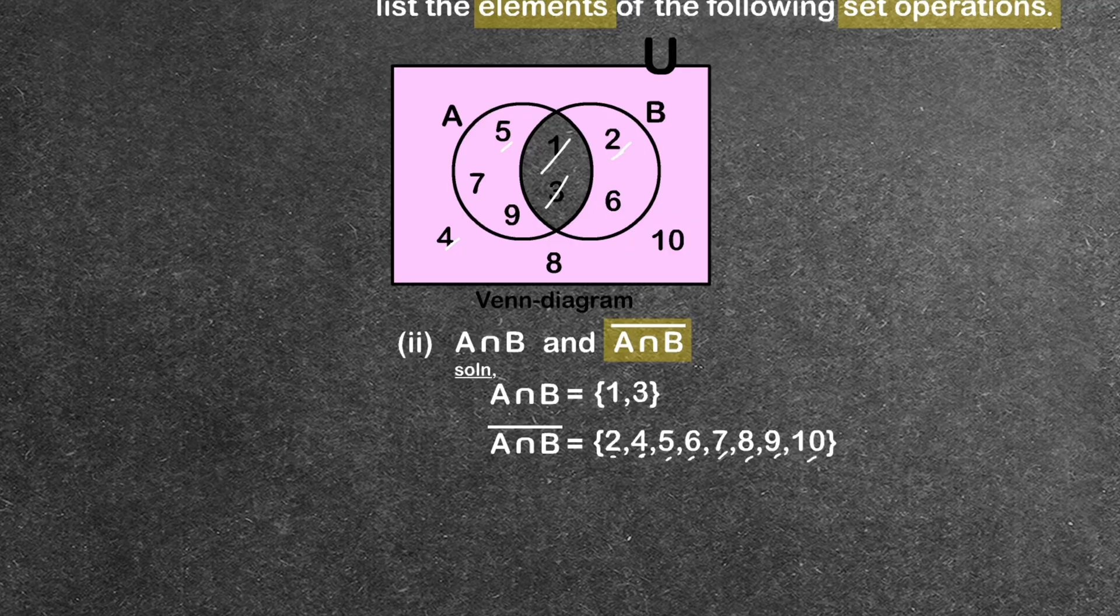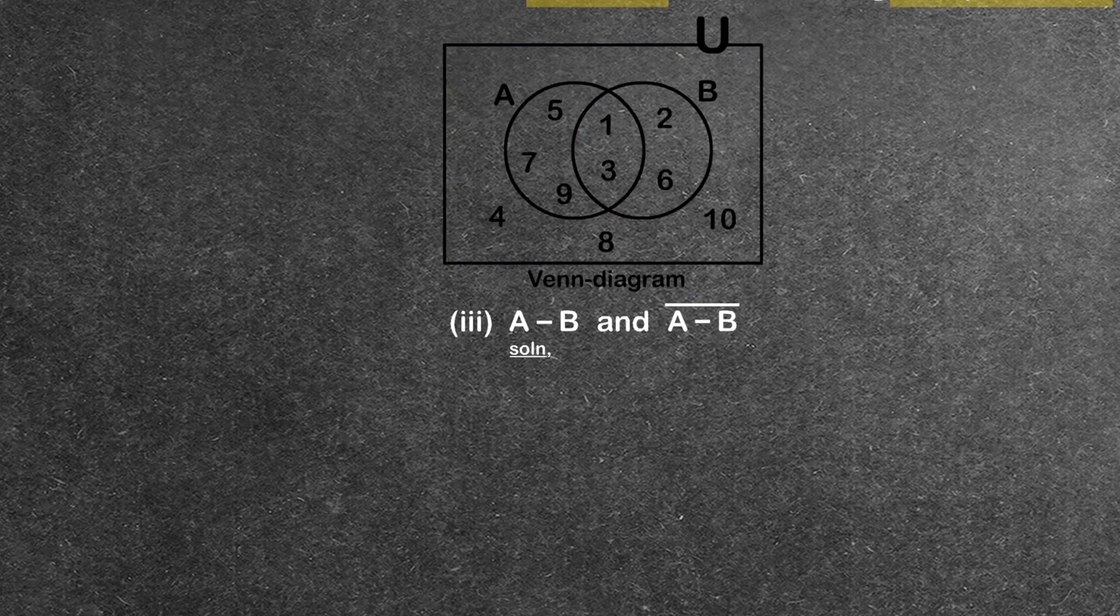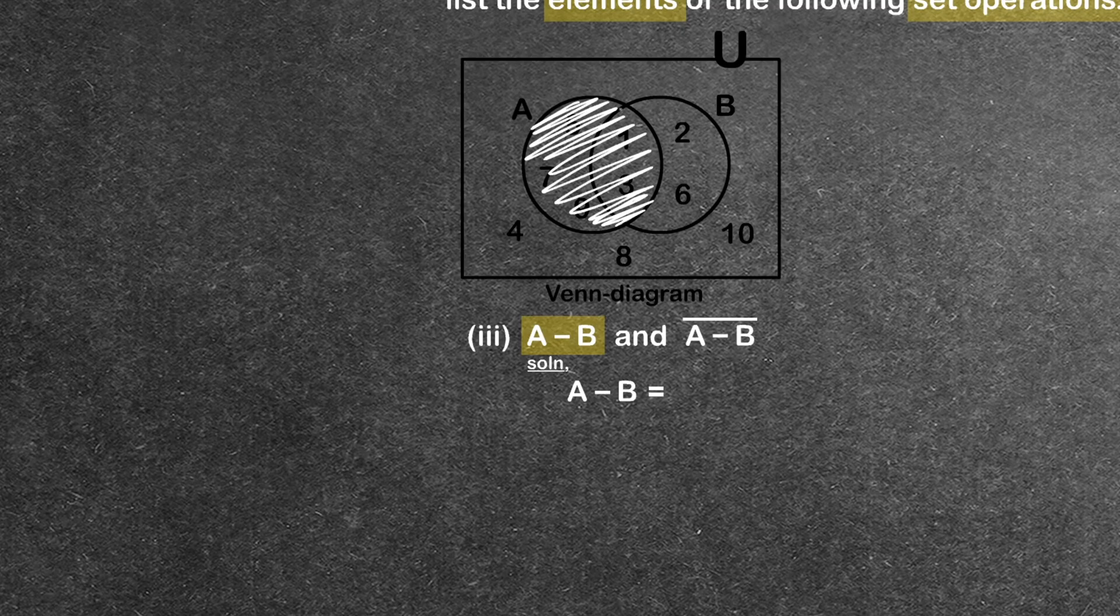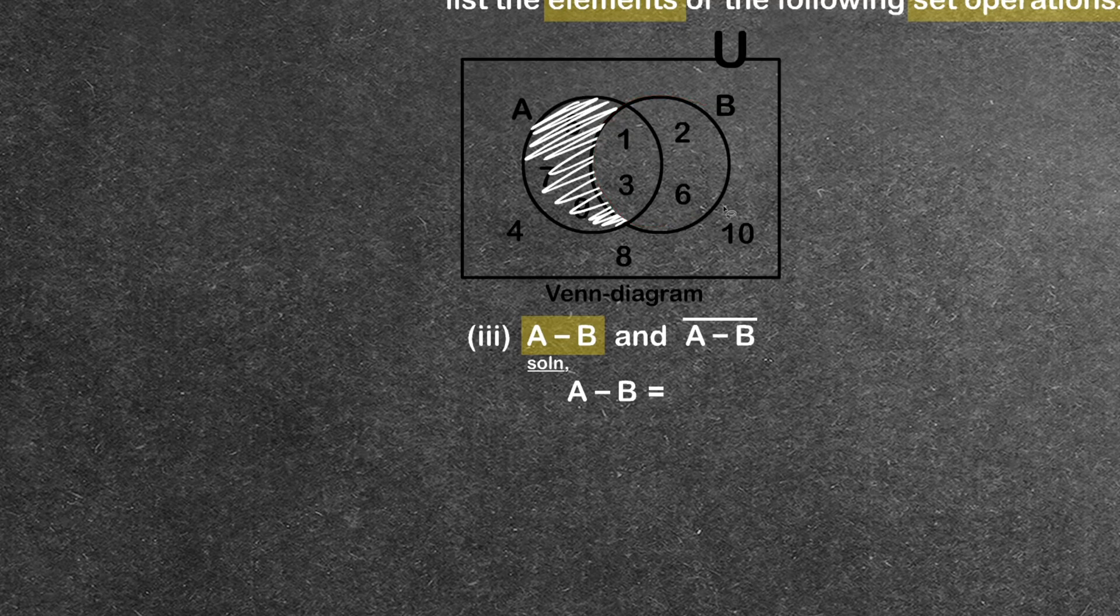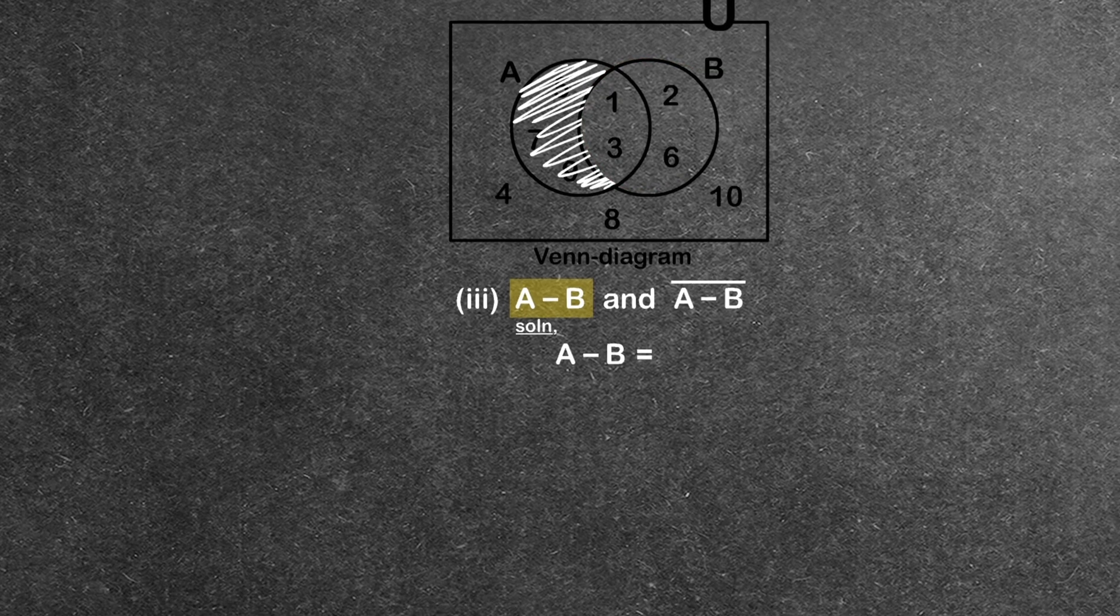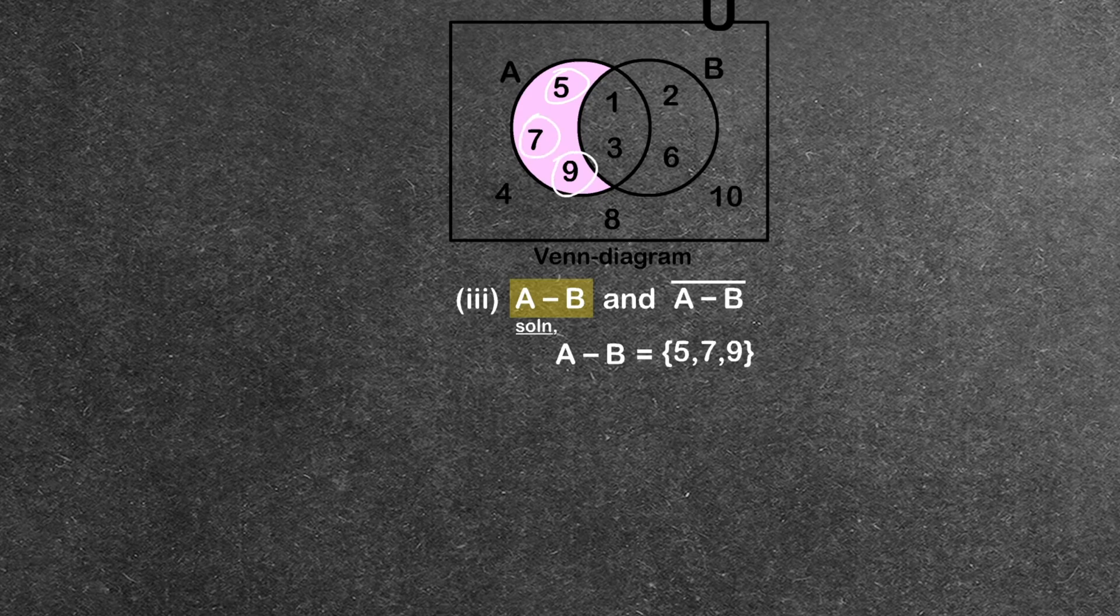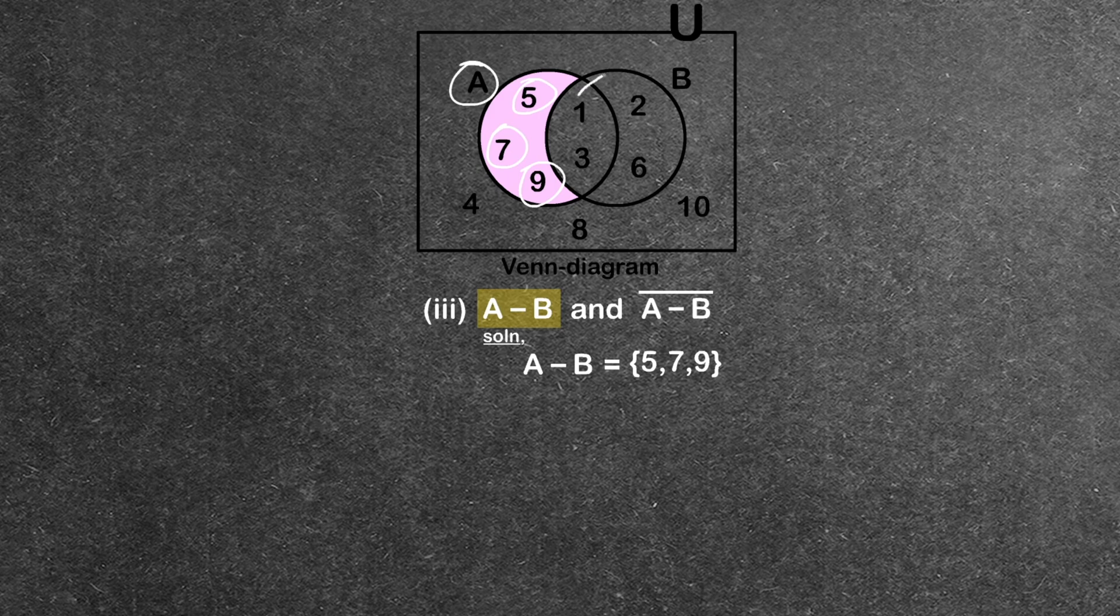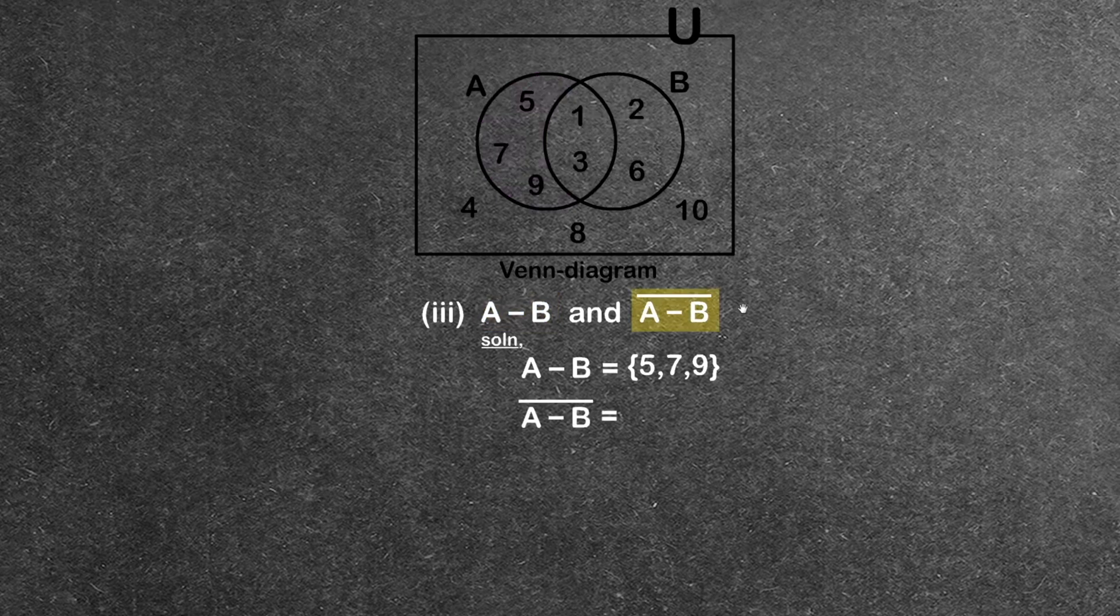Now for part (iii), A−B (A minus B). A minus B means take all elements of A and remove the elements that are also in B. From A, we remove the common elements with B. This gives us 5, 7, 9.